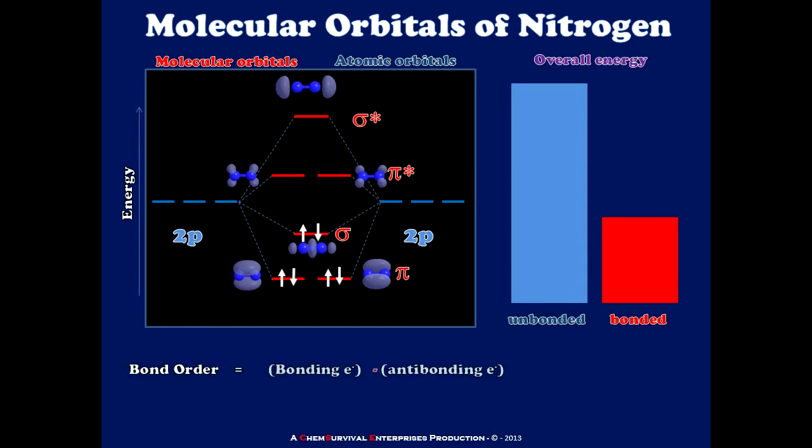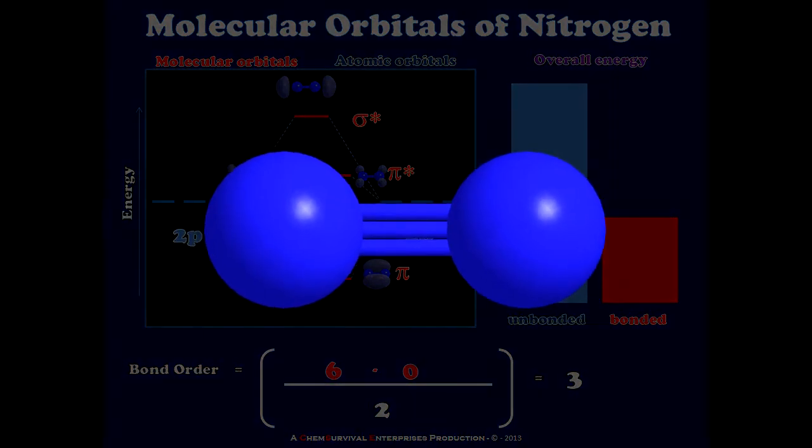And furthermore, I can calculate the bond order of nitrogen molecule in the usual way. I have 6 electrons in bonding molecular orbitals, 0 electrons in antibonding molecular orbitals, meaning that when I run my calculation, I can predict nitrogen will have a triple bond. And of course, this is the case.